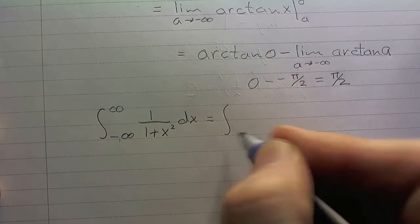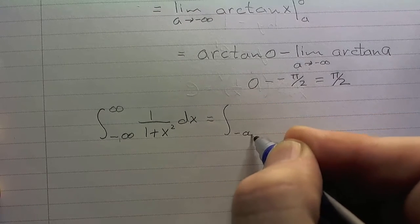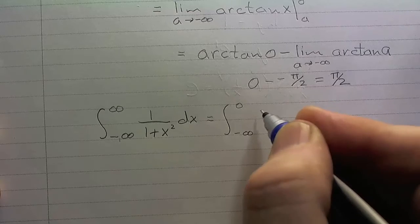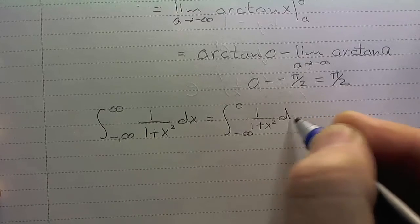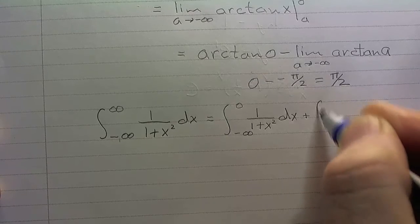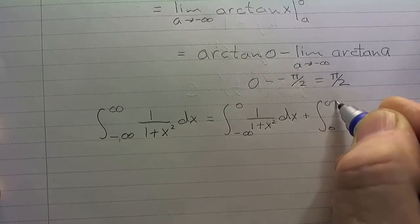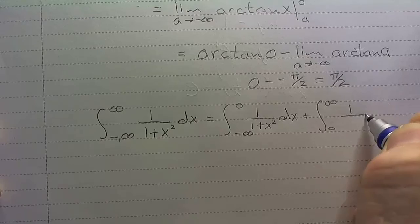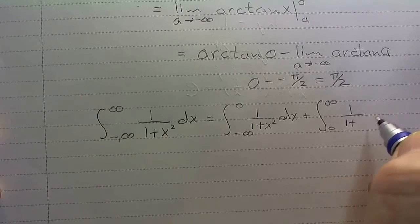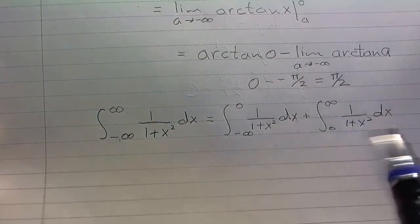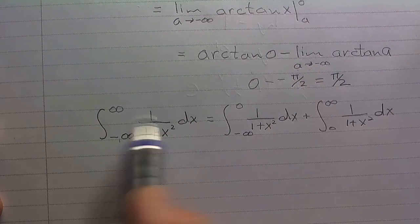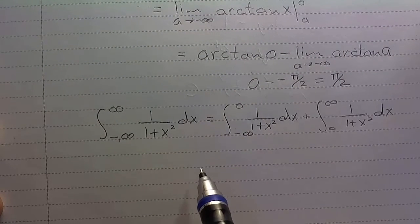I'm going to write this as negative infinity to 0 plus – now I'll pick it up over here – 0 to infinity. Like that. In other words, I take this and I break it up into two integrals like this.